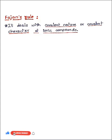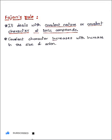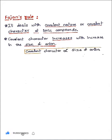What does this rule say? This rule says that covalent character increases with increase in the size of anion. That can be written as covalent character is directly proportional to size of anion. When the size of anion increases, then automatically the covalent character of a compound increases.